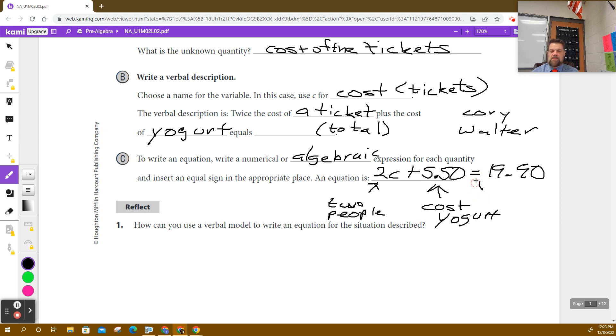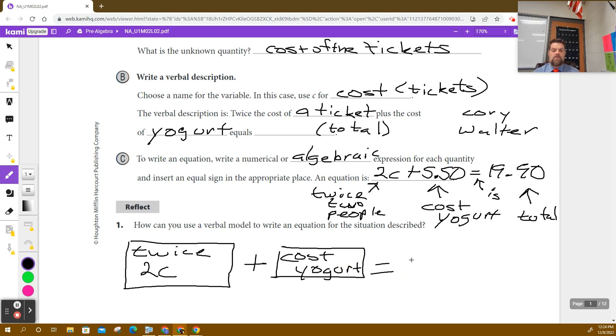And 'is,' this is the 'is' part. And this is the total. And so the word they used for two people, though, was twice. Twice means two people. So how did that help? Well, what we did is we had twice, and we called that C, or you could say 2C, twice the cost of the ticket, plus the cost of the yogurt is equal to the total cost.